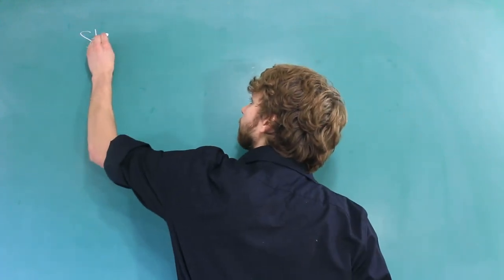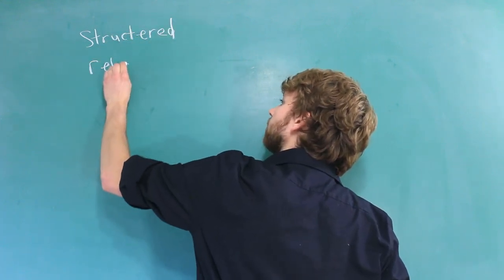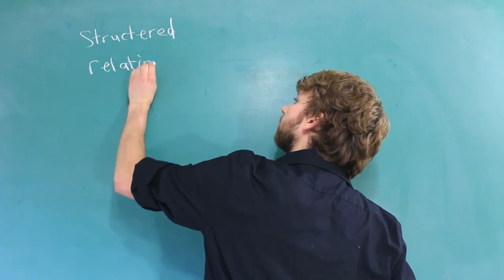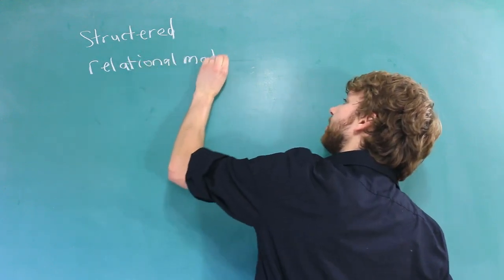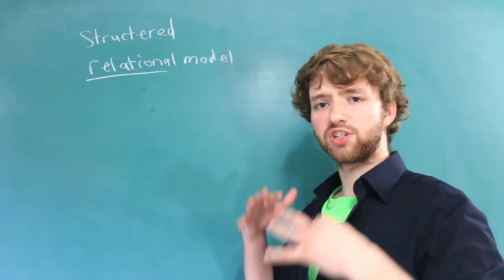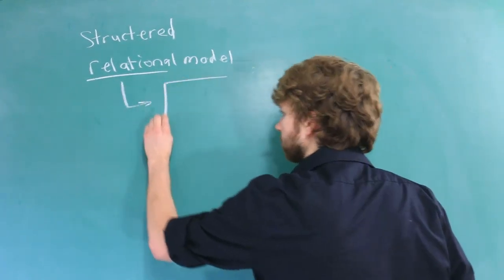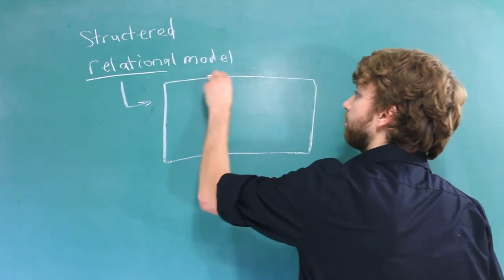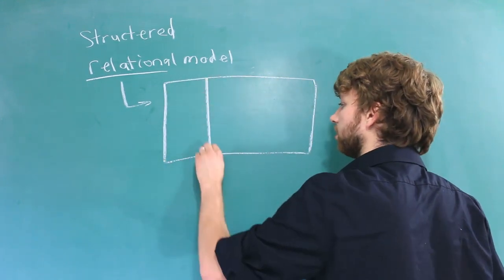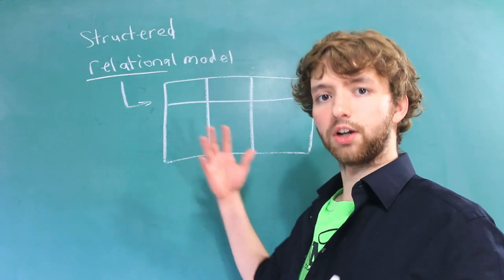So to begin, it's important to understand the difference between structured and non-structured data. So structured data is what we are so used to. And when we talk about a relation, we are talking about a table. So relation is just a fancy word that means table. And a table is broken up into columns and rows, so it looks something like this. And up at the top, we put the columns of the data we want to store.